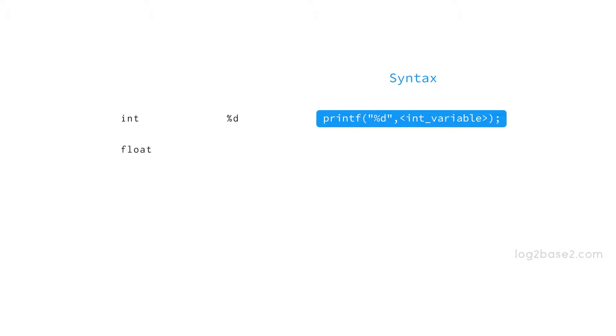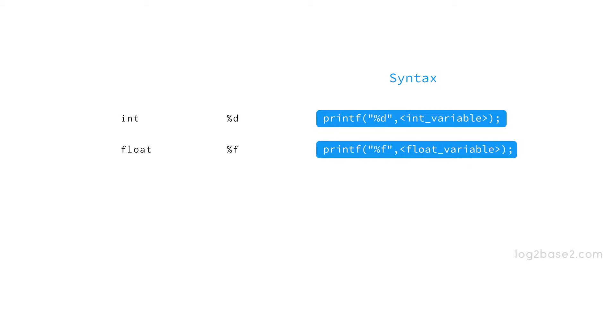Next, for float type, we have %f, and the syntax to print a float variable is: printf("%f", name_of_float_variable).